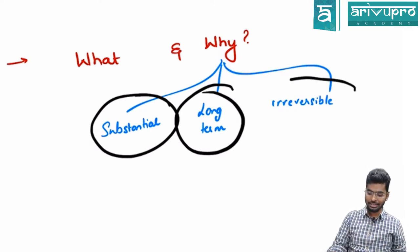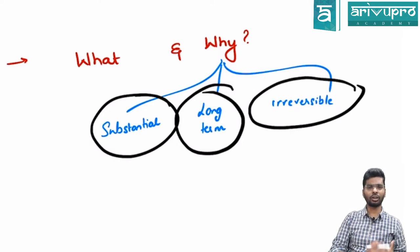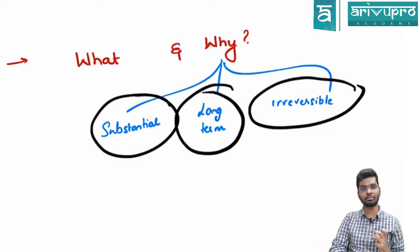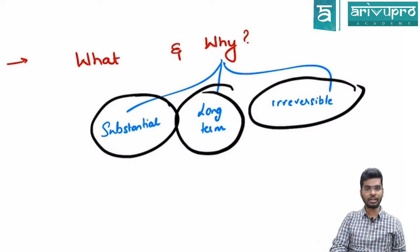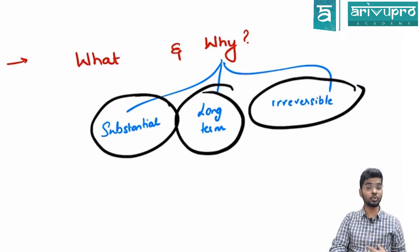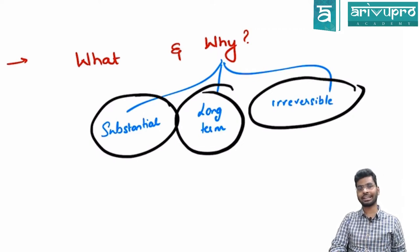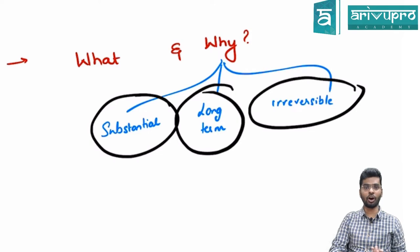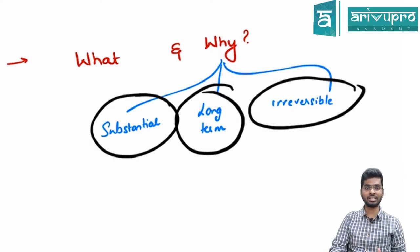The third characteristic is the irreversible factor. If you start constructing a factory and after three years decide it is not going to work, even if you shut it down, the losses you suffer will be large. Similarly, if you buy a machine that no longer serves its purpose, you lose a substantial amount of money.